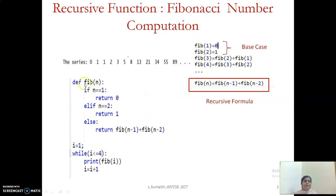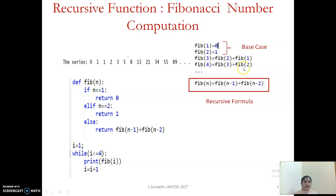With this understanding, we will write a recursive function for the Fibonacci series. Let's name the function 'fibonacci_series' with parameter n representing the position in the series. First we write the base cases: if n equals 1, return 0; if n equals 2, return 1. If n is greater than 2 — whether it is 3, 4, 7, or whatever — we sum the previous two numbers, that is fibonacci(n-1) plus fibonacci(n-2). We have now transformed our understanding into a function.